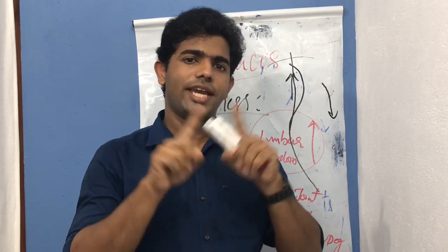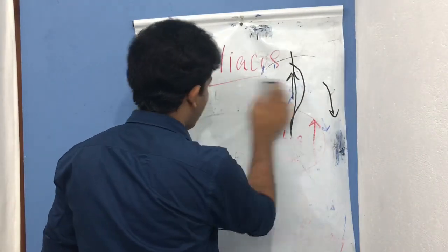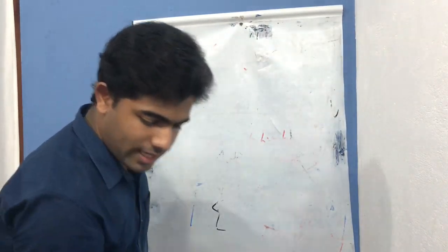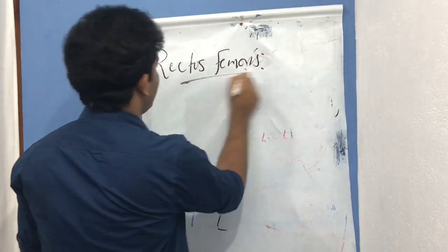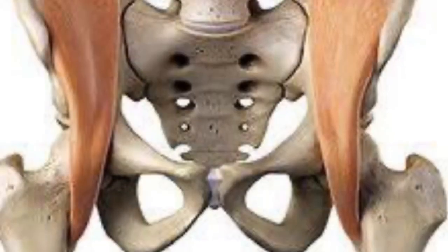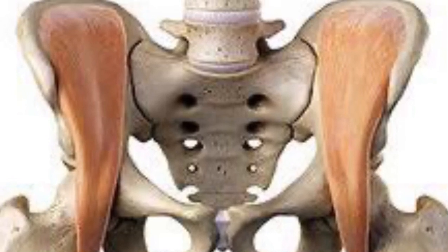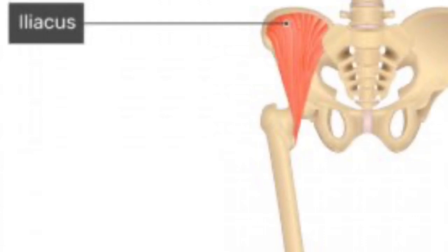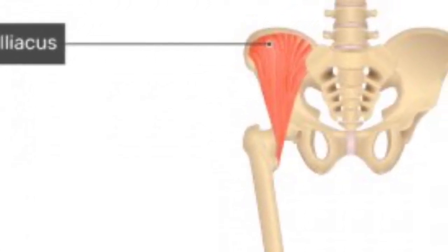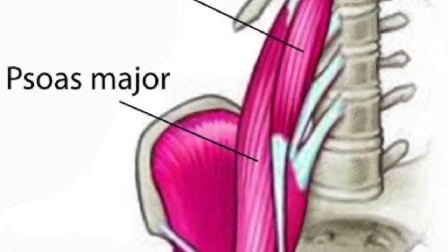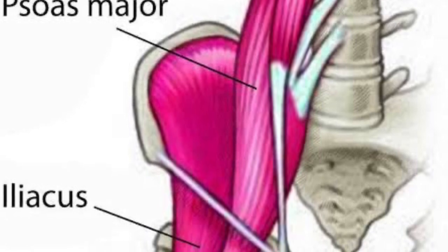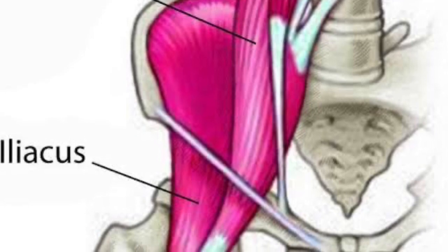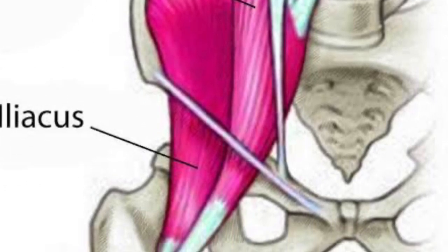Along with treating lumbar spine pathologies, always look into the pelvis — assess the iliacus and psoas muscles, palpate them, test them, check whether they are tight, and determine if stretching is needed. Don't simply go for stretching or strengthening in isolation, because the chain is interrelated and problems in one link can precipitate problems throughout the chain.